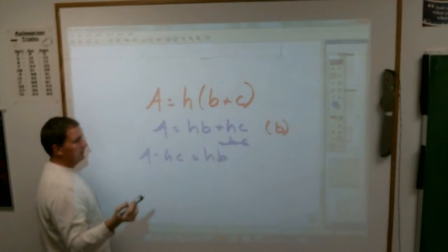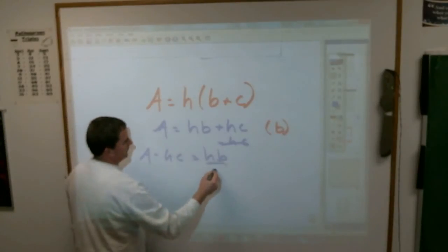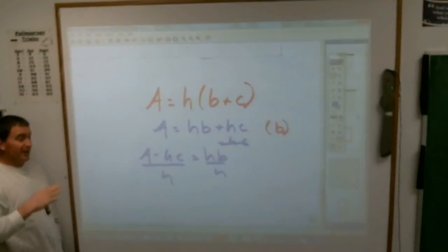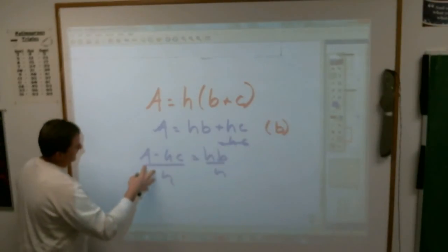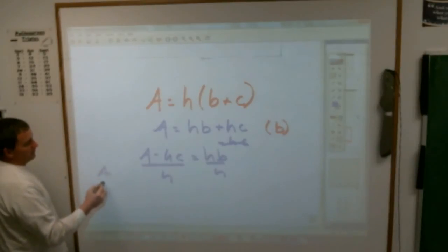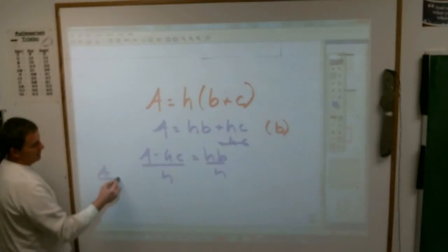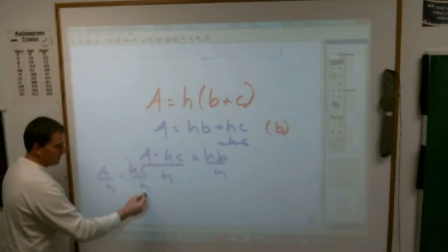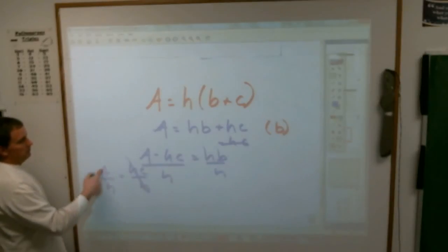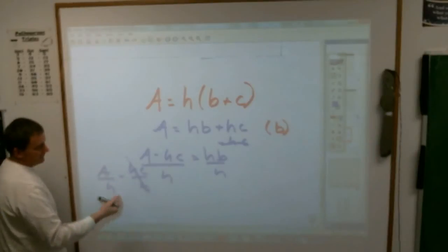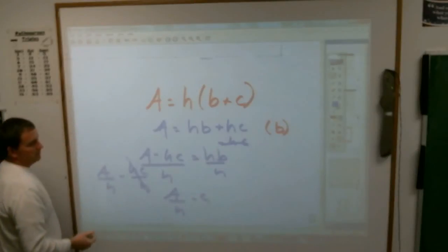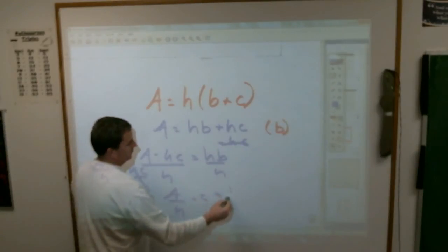And then to get B by itself, you're going to divide by H. Now, here is where, children, remember when I said you could write it like that, or you could write it split apart? Here is where, again, based on whatever book it is, if you split this apart and write it as A divided by H minus HC divided by H, you could actually cross off these H's, and your answer would be A divided by H minus C. And again, that's kind of a tough call as to say exactly what books ask for or do.